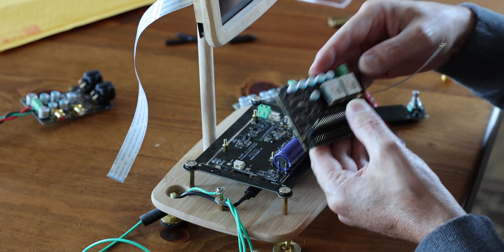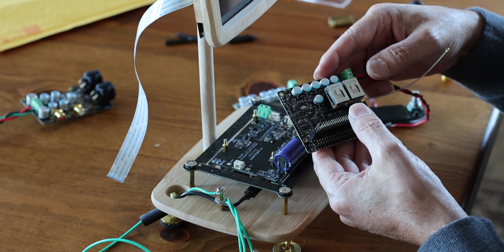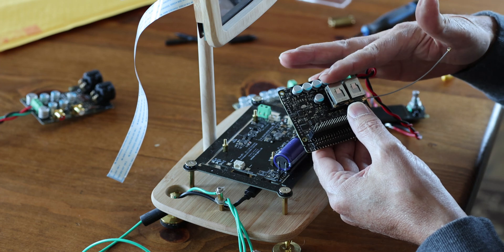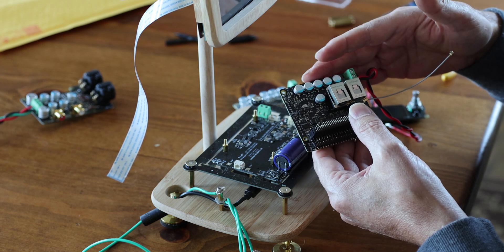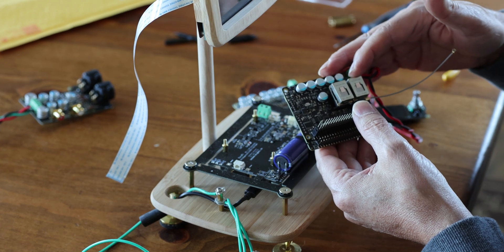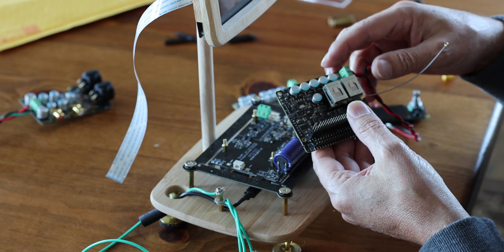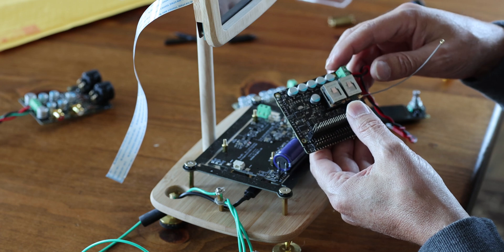You can either keep the clocks that come with the board, that's the least expensive way, or you can upgrade to like an Accusilicon or a CRYSTEK or in this case I'm using the fancy Ian Canada SC Pure clocks.